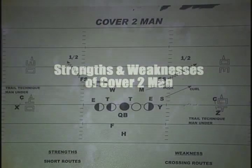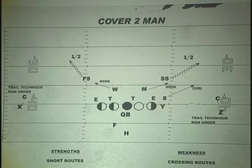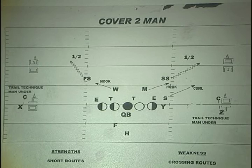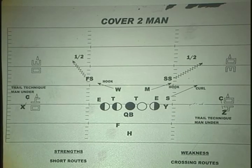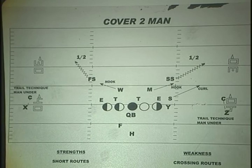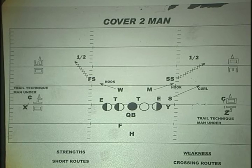Coaches, let's look at the structure of what we call Cover Two Man. It is a defensive structure that combines elements of two different types of coverage techniques. Cover two means that we have two safeties playing half field zone — playing deep halves, splitting the field in half. The man terminology comes from the rest of the defense playing man to man underneath. So instead of playing cover two with five underneath zone, the defense plays what we call man underneath trail technique.